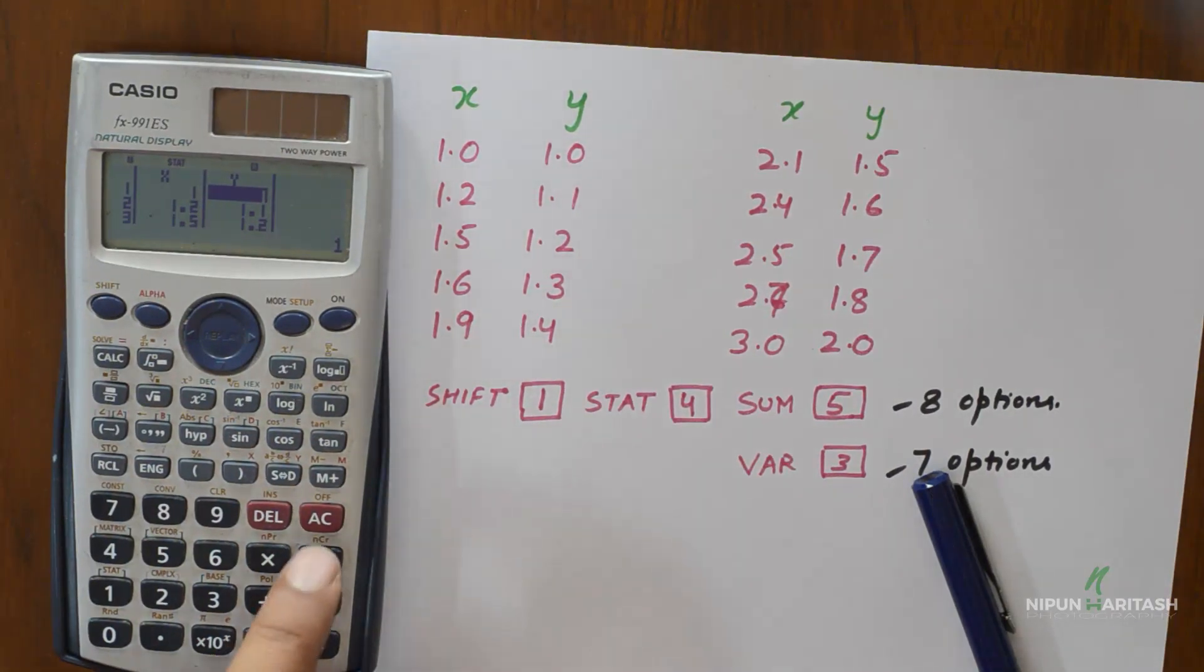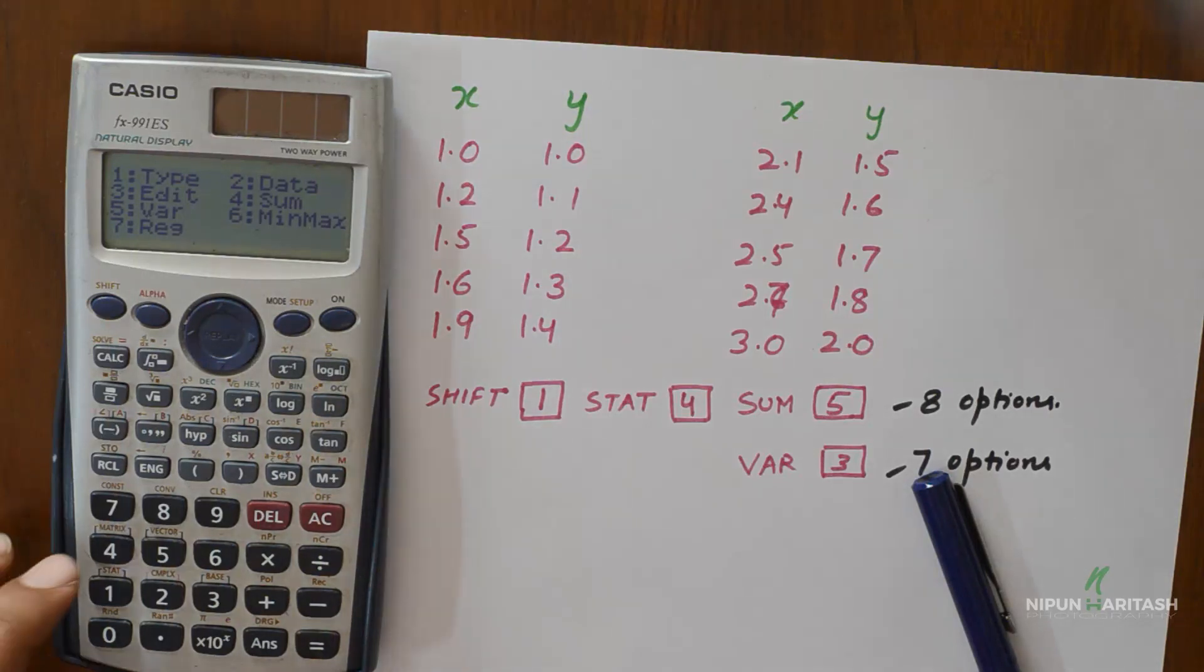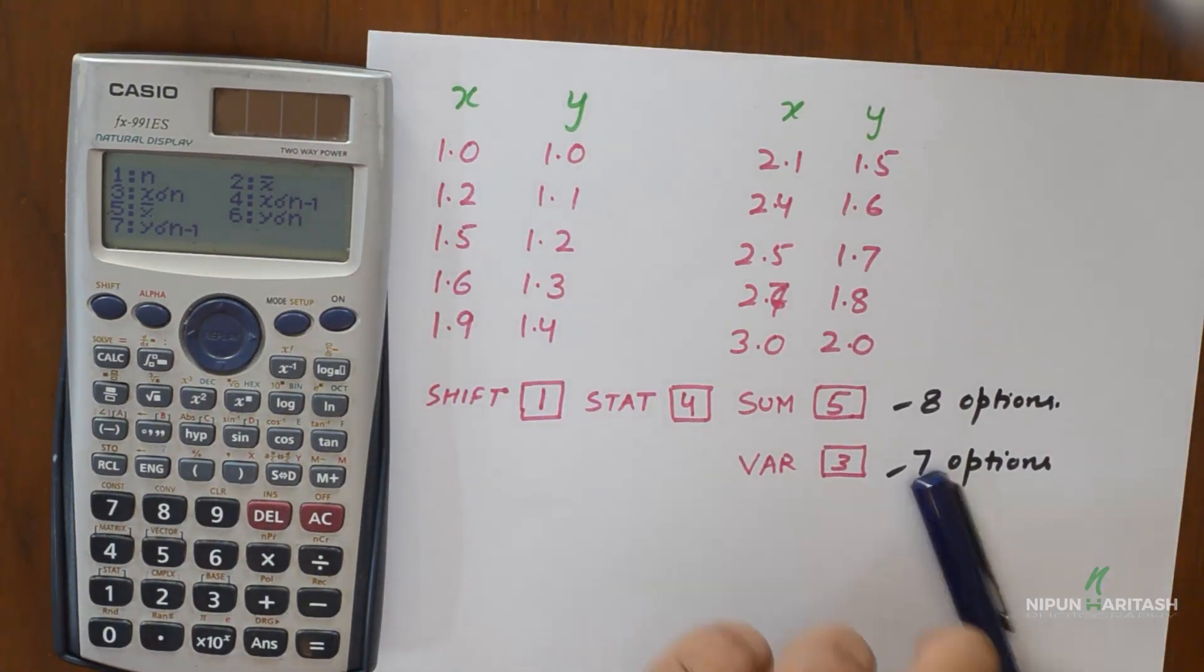I can clear the screen. And now if you go to shift and then stat, now we go to 5. So we get all the options there. We get 7 options.